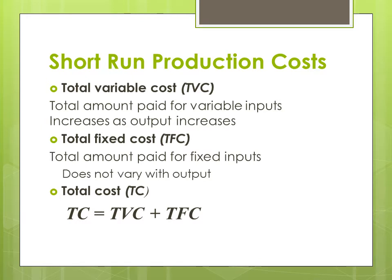They have to be maintained even when production is zero. So in total fixed costs, total fixed costs don't vary as output varies. Total cost equals total variable cost plus total fixed cost — it is a combination of total fixed cost and total variable cost.